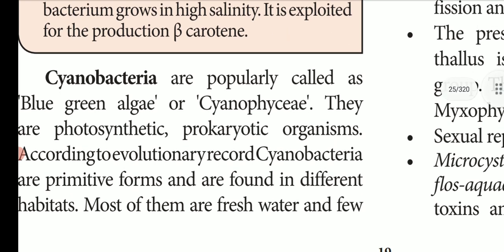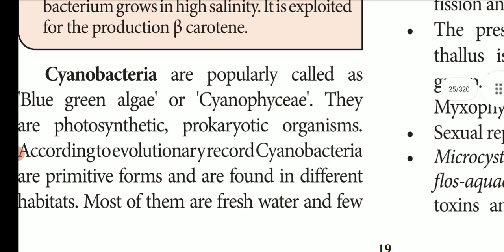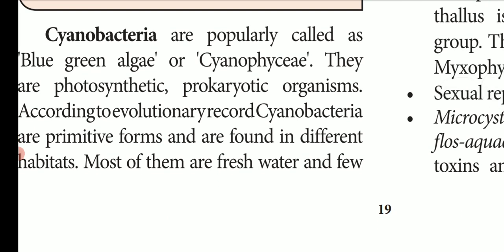They belong to a group called Cyanophyceae. Cyanobacteria are called primitive forms. They are mostly found in fresh water — lakes, ponds — and a few are marine. For example, Trichodesmium and Dermocarpa are marine cyanobacteria found in the ocean or sea.